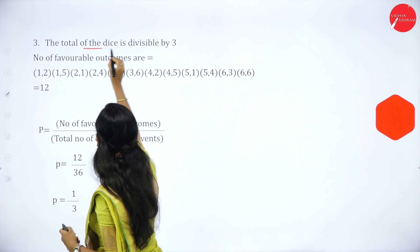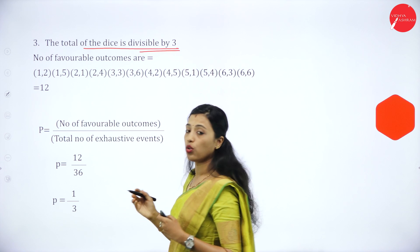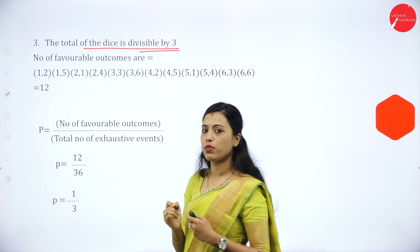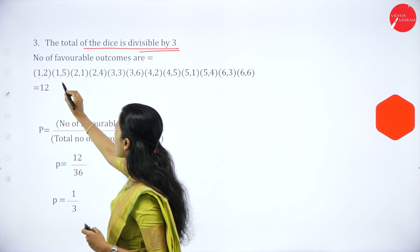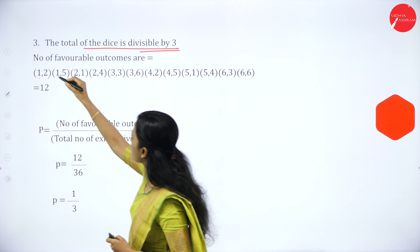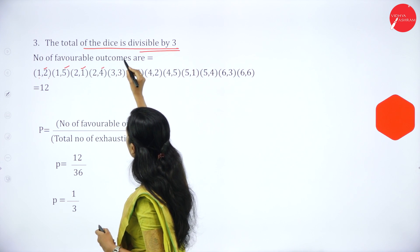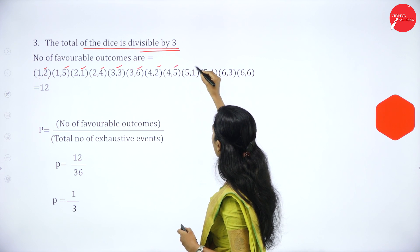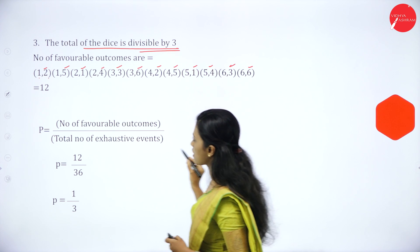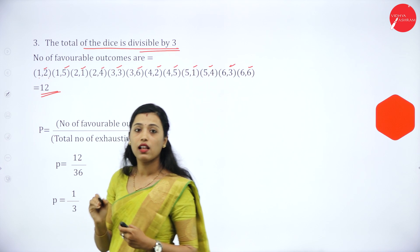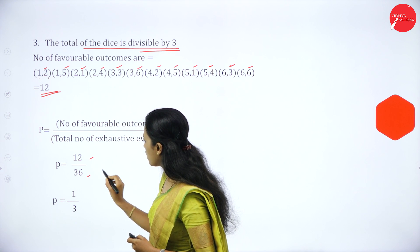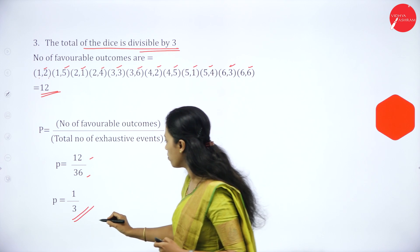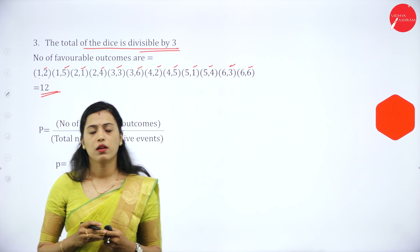Third: the total of the dice is divisible by 3. For example, 1+2=3 (divisible by 3), 1+5=6 (divisible by 3). The favorable outcomes are: (1,2), (1,5), (2,1), (2,4), (3,3), (3,6), (4,2), (4,5), (5,1), (5,4), (6,3), (6,6) — 12 possible outcomes. So P = 12/36 = 1/3. The probability that the total of the dice is divisible by 3 is 1/3. This type of problem will come for 10 marks in your examination.